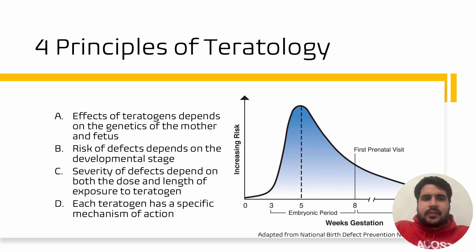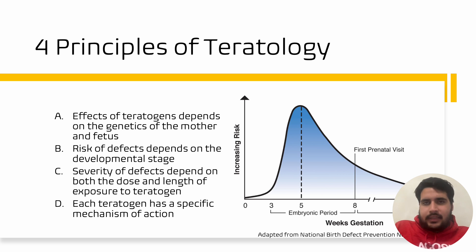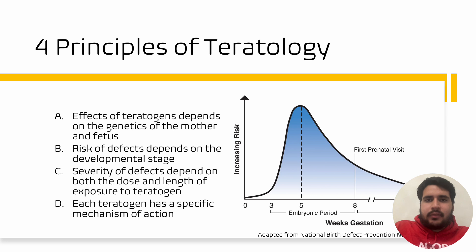So now let's move on to covering the four main principles of teratology. First, the effects of teratogens depends on the genetics of the mother and the fetus. Secondly, the risk of defects depends on the developmental stage of the fetus or the embryo. For example, in the diagram on the right, we can see that the most sensitive time in embryonic development and the highest risk is actually the first trimester, and the risk of birth defects decreases as time goes on or the gestation week increases.